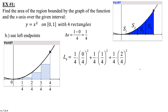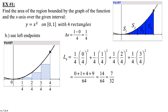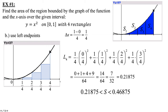All denominators are 64, but now we have 0 plus 1 plus 4 plus 9. This comes out to 14 over 64, which reduces to 7 over 32, or 0.21875.